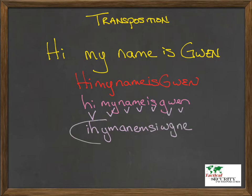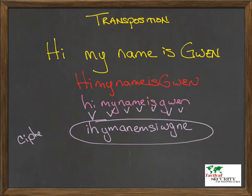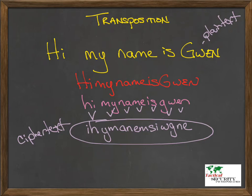So now what we have is our transposed text. This would officially be our cipher text, while the original up here is our plain text. With transposition, everything is still there — there's no letter change whatsoever; it's just the order that's different. So in order to decrypt it, you'd have to know what kind of logic was followed on the encryption side, and then you can undo it with ease and understand that my name is actually Gwen.